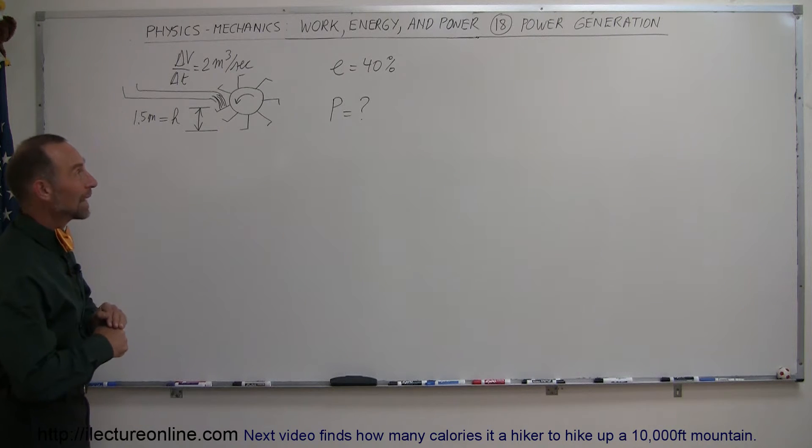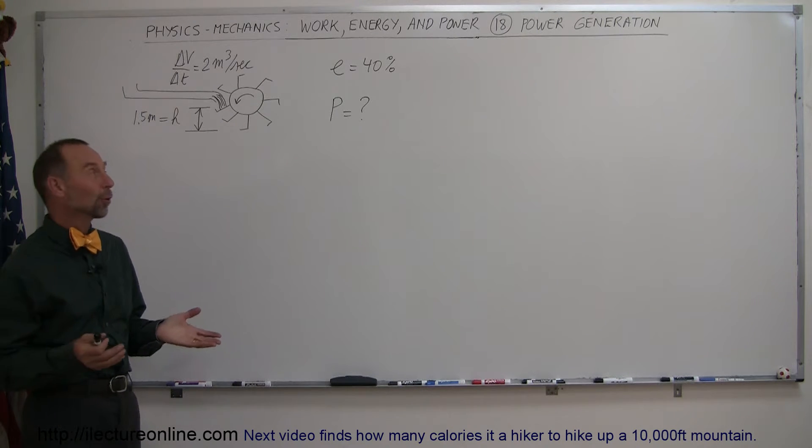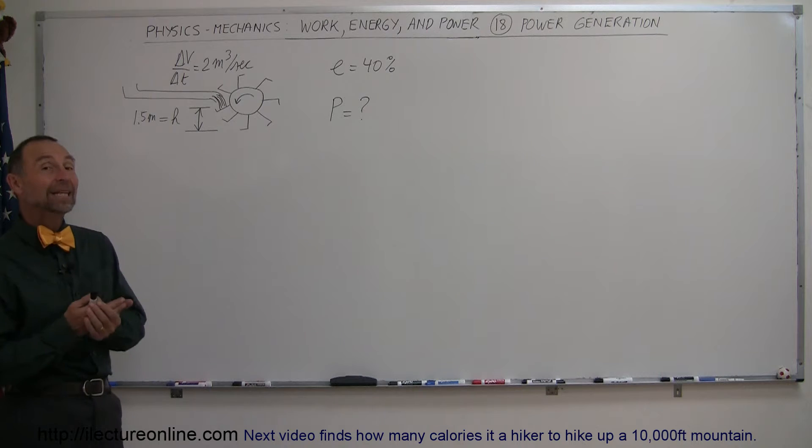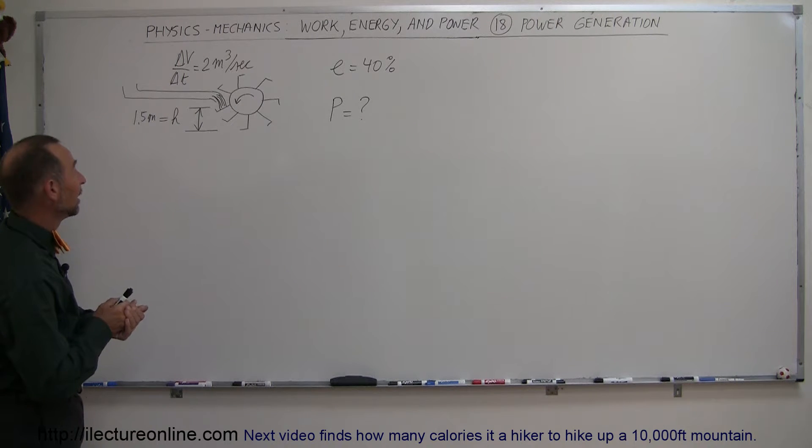In our next example, we're looking at how we generate power. One of the most eco-friendly ways of generating power is to use the potential energy of water to turn that into electricity.